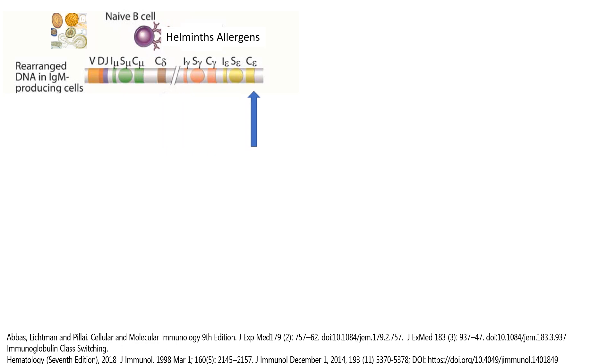Downstream, we have the switching and constant regions for gamma and eventually for epsilon, which would be the switching and the constant region for IgE.